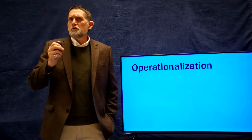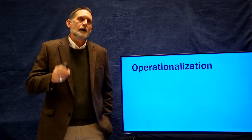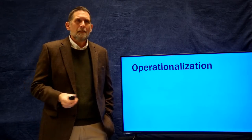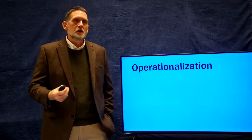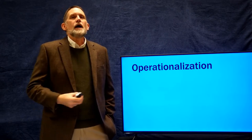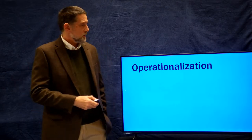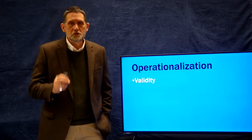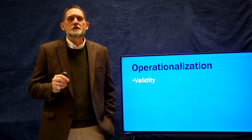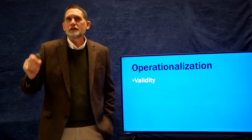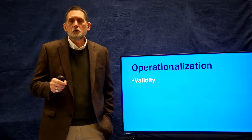In order to put something into numbers, we have to do what's called operationalization. We take an idea of something we want to measure, operationalize it, and turn it into a set of numbers. To do that, we have to have a measure that's valid, which means it measures what we think it's supposed to measure.